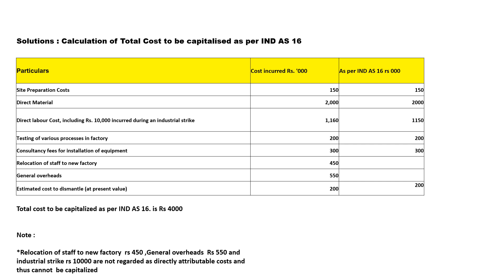The direct labor cost includes 10,000 incurred during an industrial strike. This is not directly related to the construction of a new factory, so we are not going to include this. Excluding this 10,000, the total direct labor cost is 1,16,000 minus 10,000, which gives us 1,15,000 as per Indian Accounting Standard 16. You can mention this in a note.